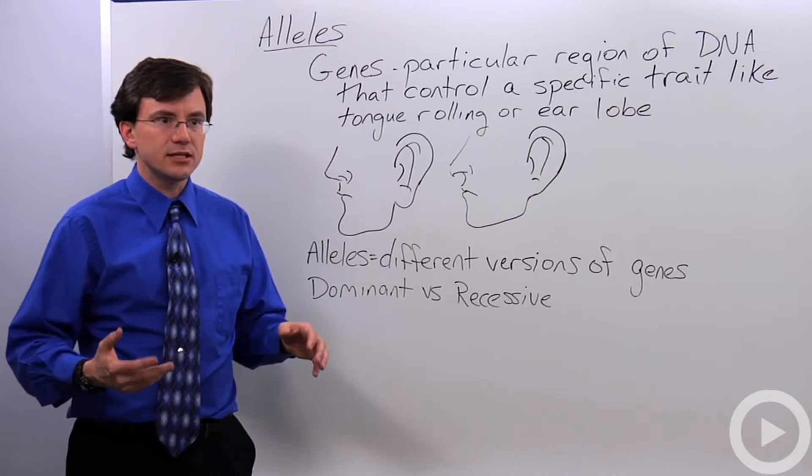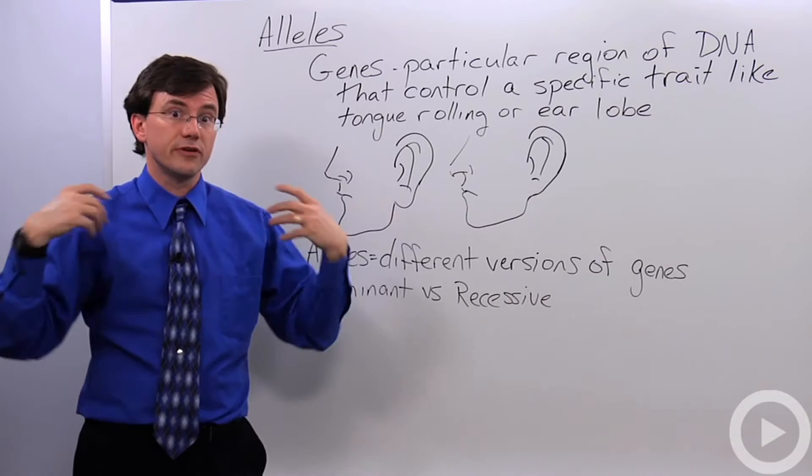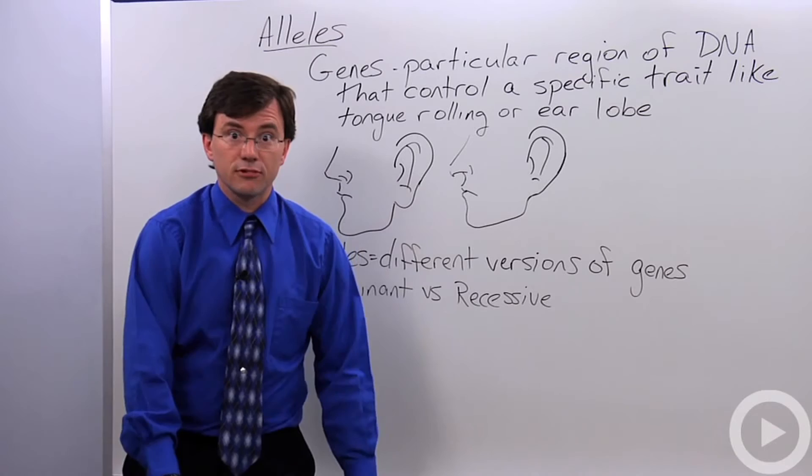We call these different versions of a gene alleles. So, it's kind of like saying genes are like articles of clothing and alleles are different brands. This is a shirt. There are various versions of the shirt gene. Those various versions or brands are the different alleles.